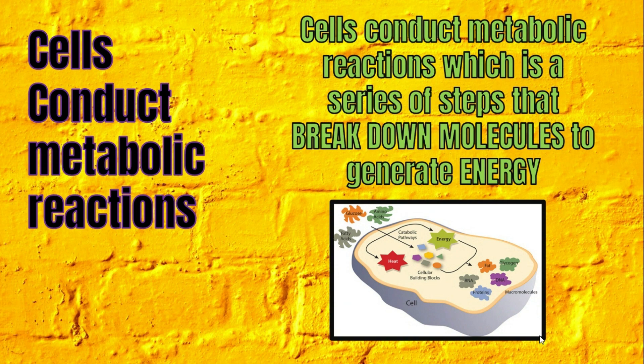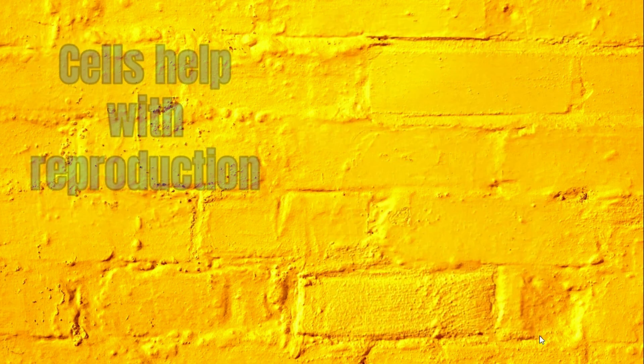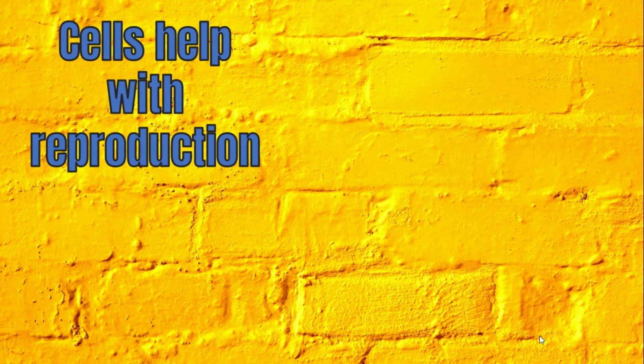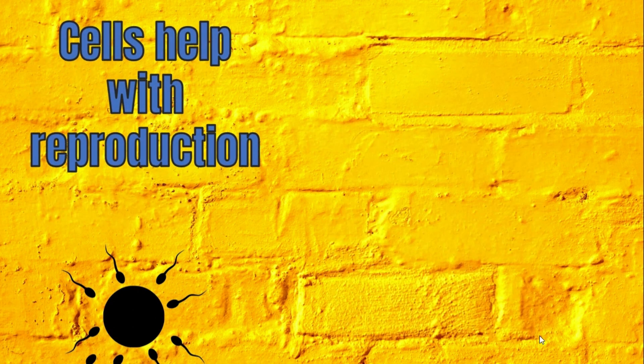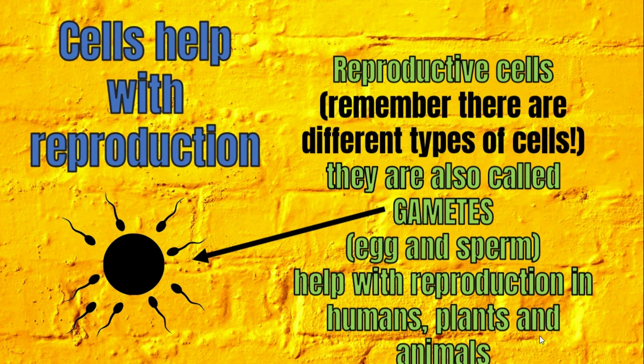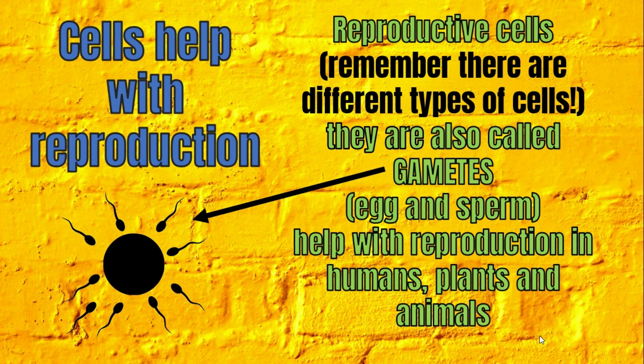Cells help with reproduction. Reproductive cells are called gametes — egg and sperm. They help with reproduction in humans, plants, and animals. So these are your cells that help with reproduction.